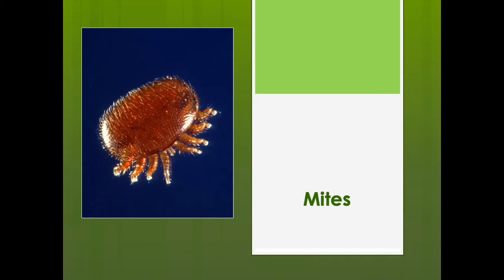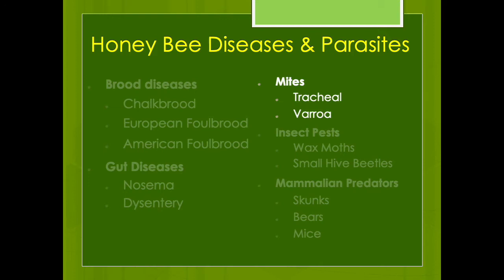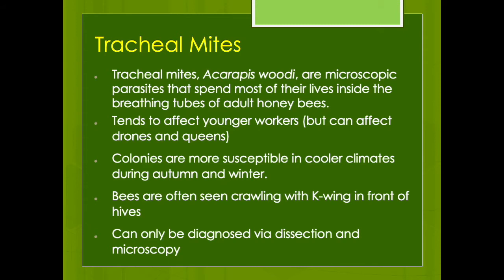The next part of this presentation is mites. I have to admit I'm not alone among beekeepers when I say I absolutely despise these little creatures. There are two types: tracheal and varroa. Tracheal mites have really gone away — we were very fortunate that when they first came we were able to breed resistance to them relatively easily. We hardly ever see tracheal mites anymore, but I'm still mentioning them for informational and historical purposes.